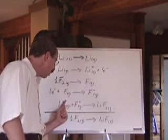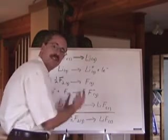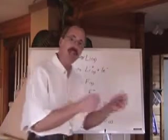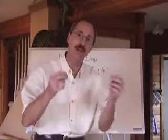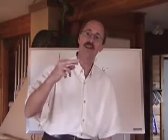Because Li positive and F negative, one and one, one times one, for their charges equals one. But MgO, two positive and two negative, two times two is four. You can just multiply the charges together to compare lattice energies.